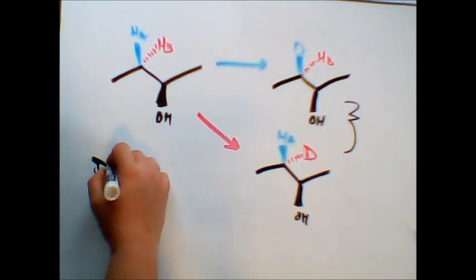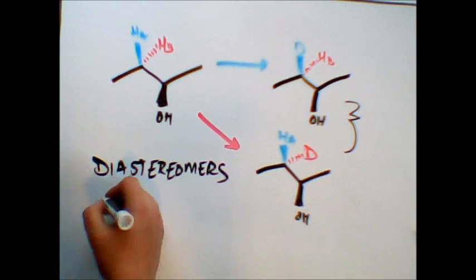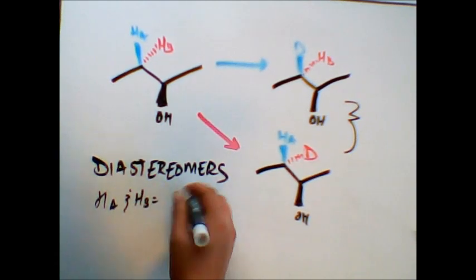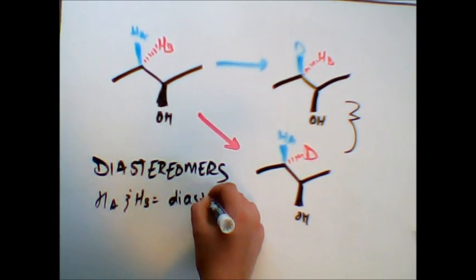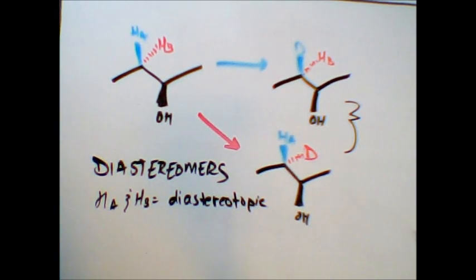and we'll notice that our resulting structures are diastereomers, because we've introduced new stereochemistry at carbon-3, but the stereochemistry at carbon-2 has stayed the same. This means that HA and HB are diastereotopic, which means that they will react completely differently in chemical reactions and will show up completely differently in spectroscopy.